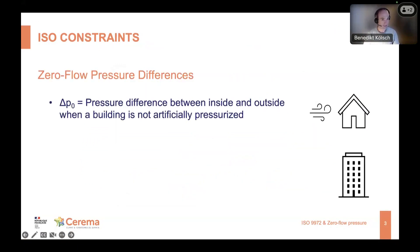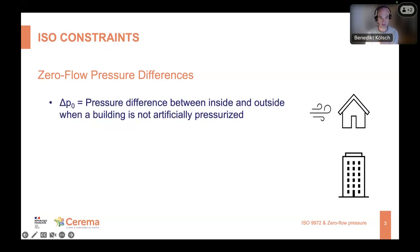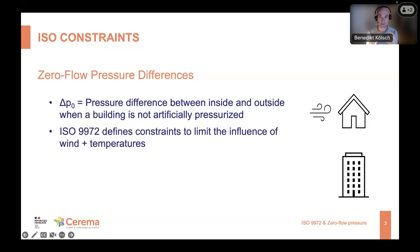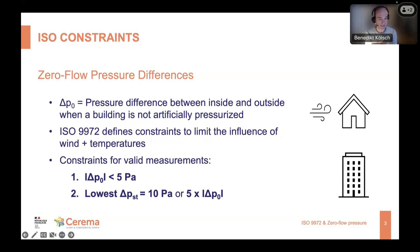As Steffi explained, you need to measure the zero flow or natural pressure difference before and after each time you conduct the test. This zero flow pressure difference is basically the pressure difference between inside and outside the building when the building is not artificially pressurized by a fan. This can have two sources: either wind or stack effect. Stack effect is particularly prominent for high-rise buildings. The standard clearly defines the limits of these constraints on the zero flow pressure difference to limit the influence of wind and temperature on the measurement result.